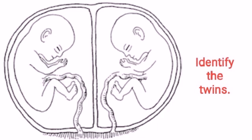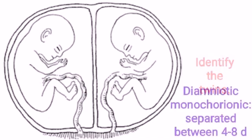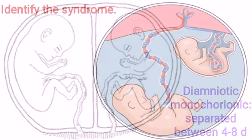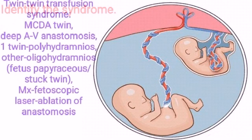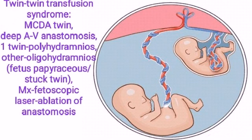Identify the twins: Di-amniotic Monochorionic — separated between 4 to 8 days. Identify the syndrome: Twin-to-twin transfusion syndrome, seen in MCDA twins.